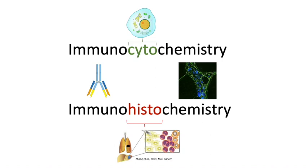ICC is closely related to immunohistochemistry, but here the term histo refers to histology in which we study tissues. Therefore in immunohistochemistry we visualize proteins in tissue samples instead of looking at individual cells, with the purpose to investigate which cells of your tissue sample contain your protein of interest. In this video we will focus on immunocytochemistry, although the basic principles behind the two techniques are similar.